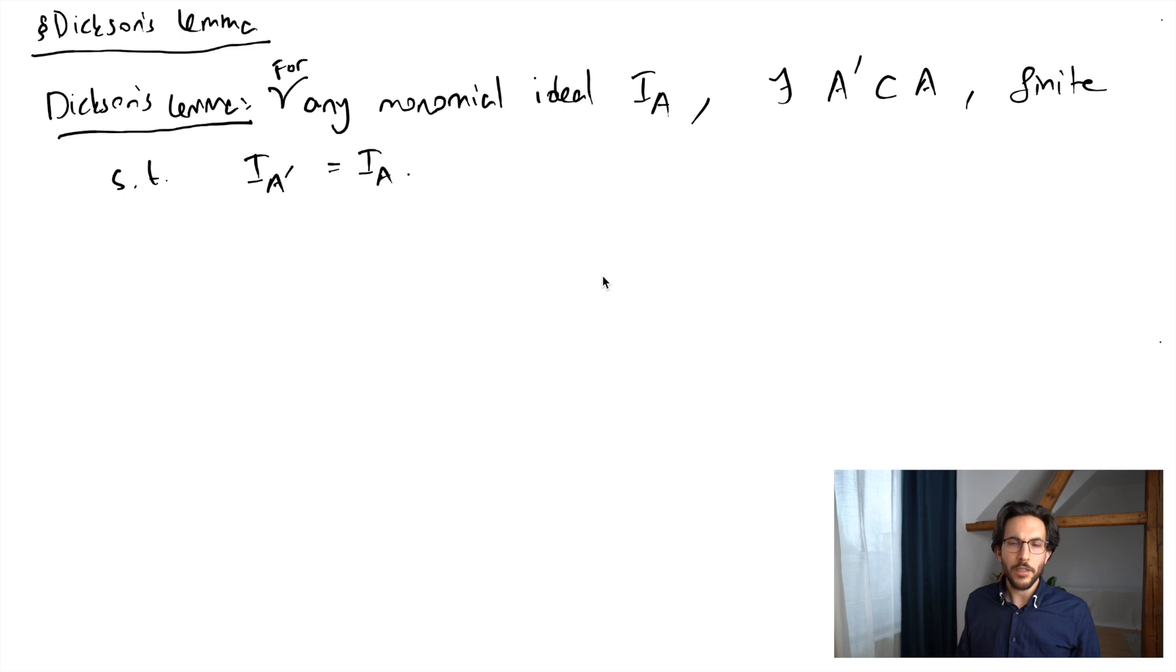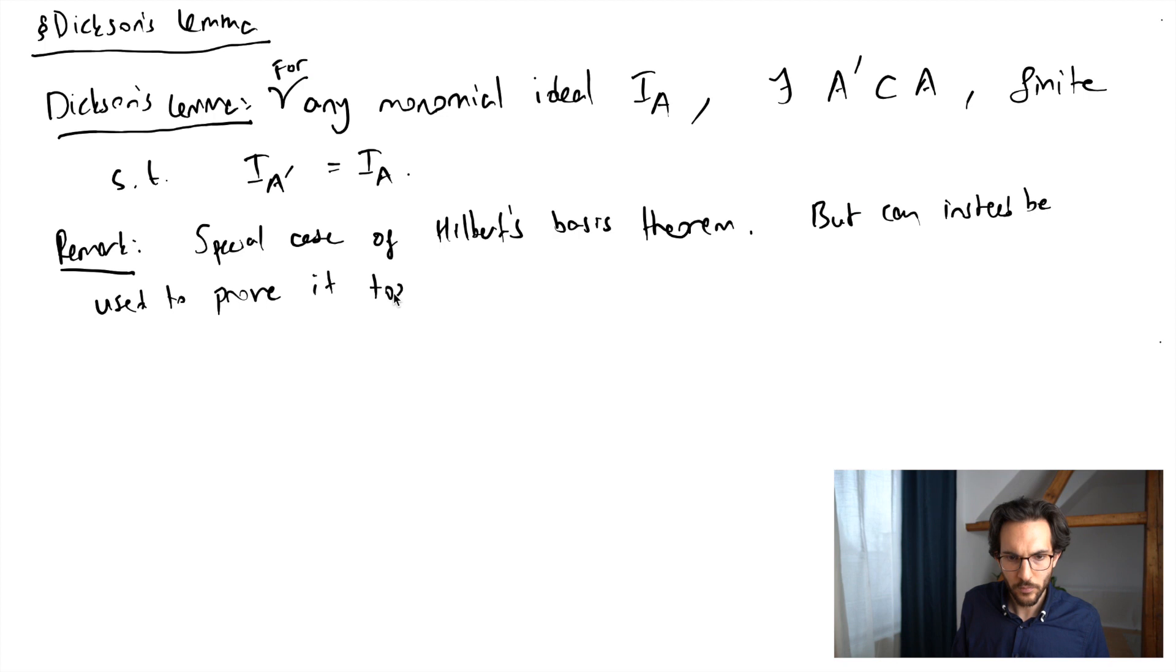Let me write down the remark that it follows from Hilbert's basis theorem. Remember, Hilbert's basis theorem says that any ideal in a polynomial ring has a finite basis. This is a very special case since we're dealing with monomial ideals. But you'll see that the proof is elementary. And in the end, using Gröbner basis, something we'll do later, Hilbert's basis theorem becomes a simple corollary.